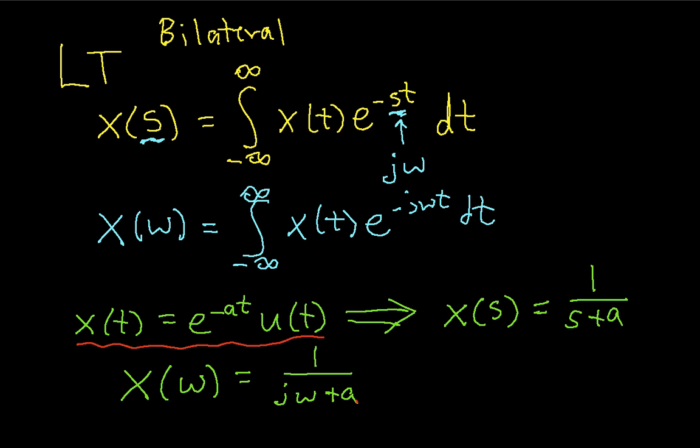If you recall, the magnitude spectrum was largest when omega is equal to 0 and then it tapers off as omega gets large, either positive or negative, which makes this, again, a crummy low-pass filter. So with that, we'll end this video.